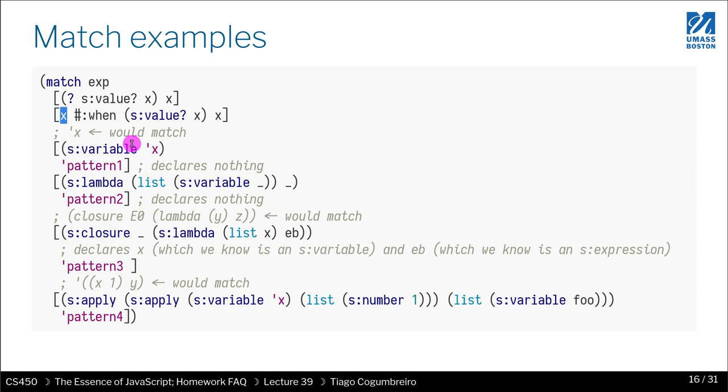Here we're defining a variable x, a Racket variable x. Here we're defining a symbol, think string. A string that contains x, that is exactly x. It could be anything. So this is how you match if a variable has a certain specific name.